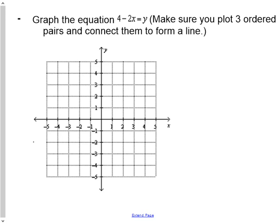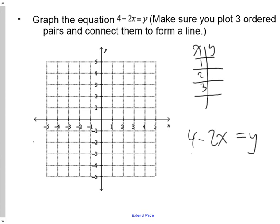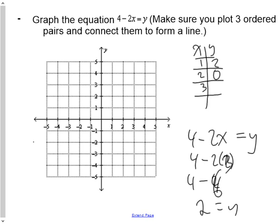Graph the equation 4 − 2x = y. Do not rearrange to 2x − 4, as that is not the same thing. Substitute x = 1: 4 − 2 = 2. Substitute x = 2: 4 − 4 = 0. Substitute x = 3: 4 − 6 = −2. Plot the three points (1, 2), (2, 0), (3, −2), connect the dots, and you have the line for that equation.